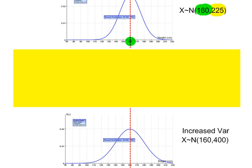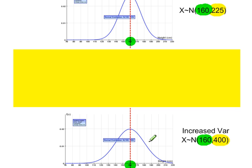Now comparing this normal distribution with another one: both have a mean of 160 so the graph is centered on the mean, but the variance this time is higher, which means this distribution is more spread out compared to the first one. So the shape of this normal distribution differs — you can see it is more spread out because it has a higher variance.